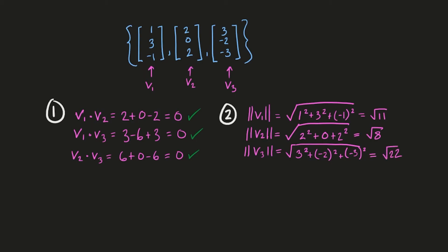All right, now we're on the third and final step here of getting our orthonormal basis. Let's create some new vectors, calling them u1, u2, u3 instead of v1, v2, v3. So for u1, we'll start off by taking each component of the original v1 over the length of v1. So the first one is 1 over root 11, and then 3 over root 11, and negative 1 over root 11.